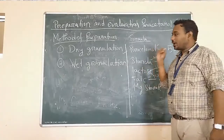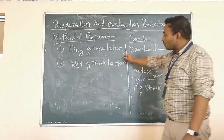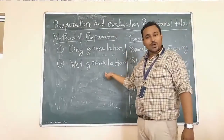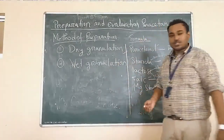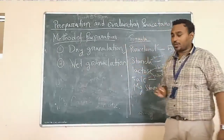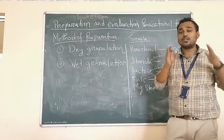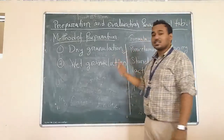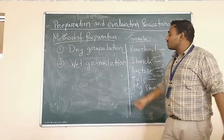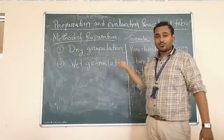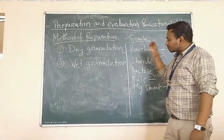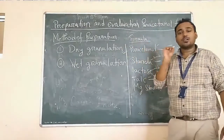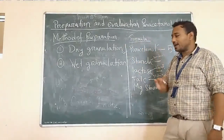For the method of preparation, we already know that we have two types: one is dry granulation, that is the direct compression method, and another one is wet granulation. We prefer the dry granulation method. The main difference between dry granulation and wet granulation is the binder — in wet granulation we use a liquid binder, and for dry granulation we use dry powdered binders.